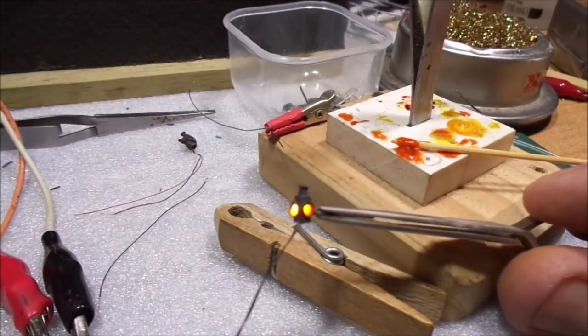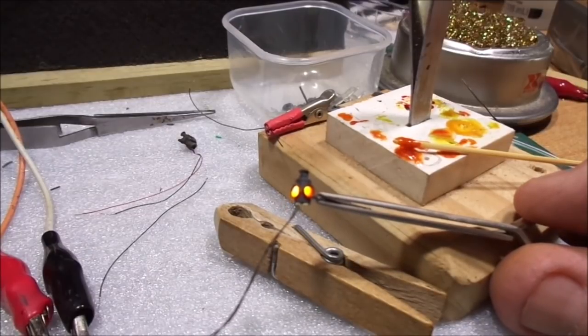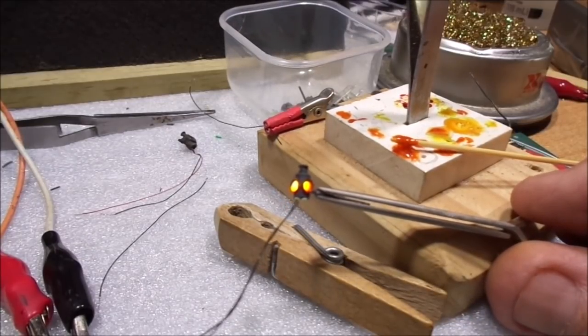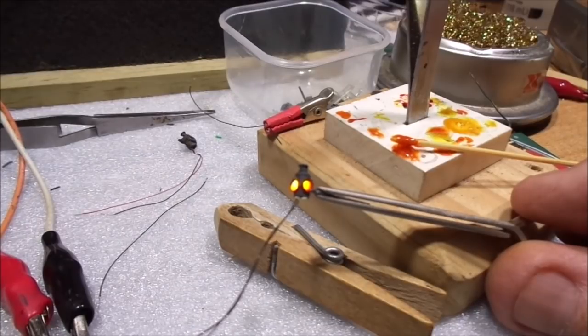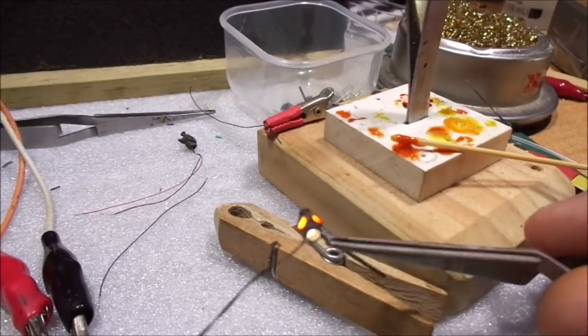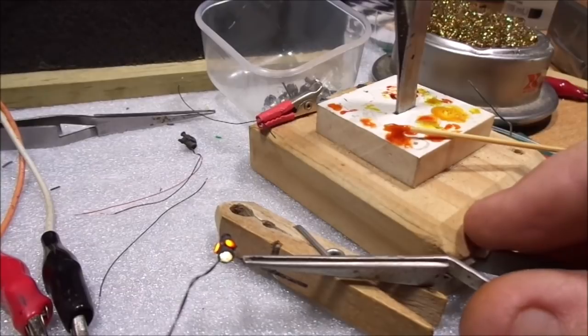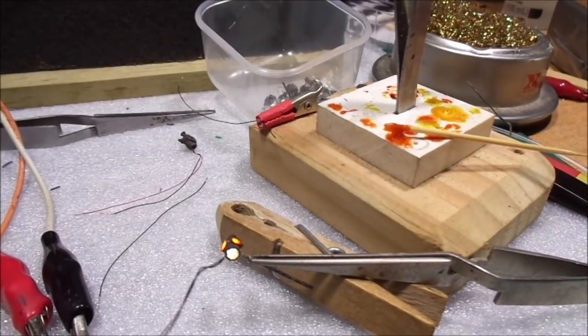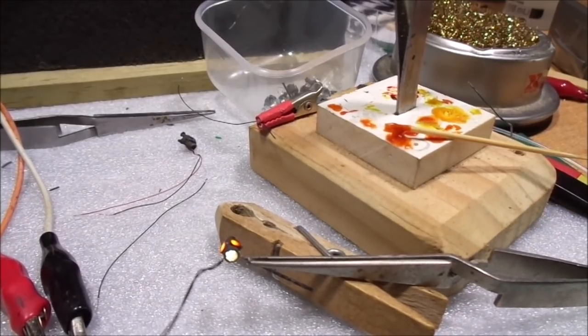And just set that aside, let that dry, and then we can assemble it. So that's how I do my caboose marker lamps. Pretty easy and you get a good result out of that. The black paint I'll do that as well while we're here.